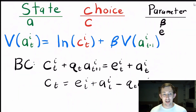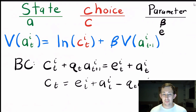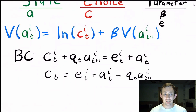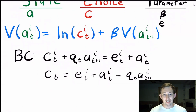What I like to do is make a state, choice, and parameter list. The state variable is the amount of assets I have today, the choice variable is the amount of consumption today, and the parameters include my endowment and time discount factor. So the Bellman equation becomes: V(a_t) equals u(c_t) — which is just the natural log of c_t — plus beta times V(a_{t+1}), the same value function of assets tomorrow.